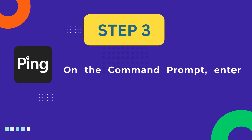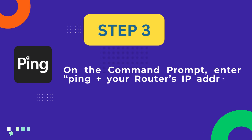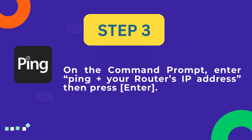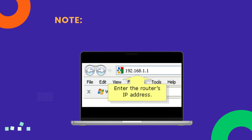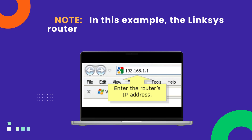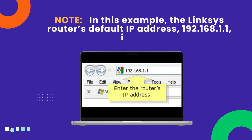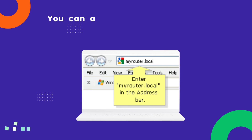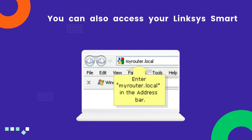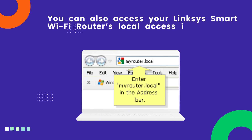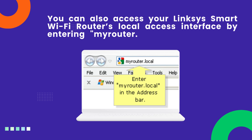Step 3: On the command prompt, enter ping followed by your router's IP address, then press Enter. Note: in this example, the Linksys router's default IP address, 192.168.1.1, is used. You can also access your Linksys smart Wi-Fi router's local access interface by entering myrouter.local in the address bar.